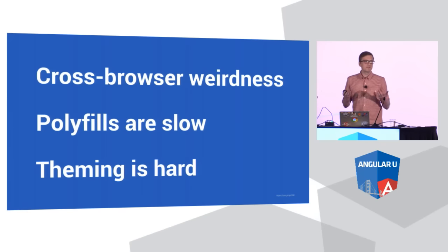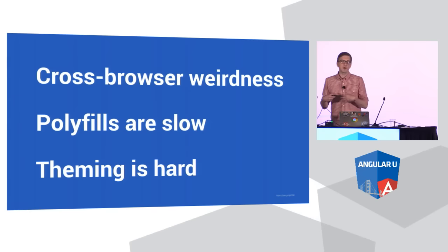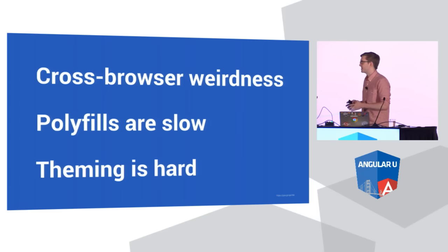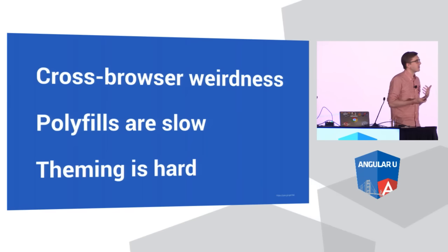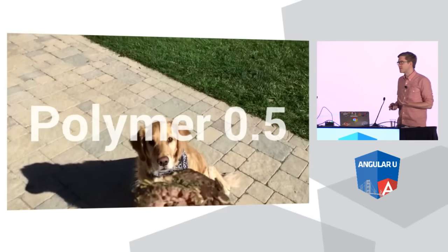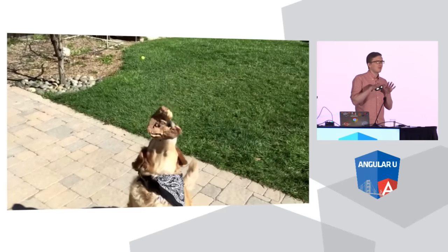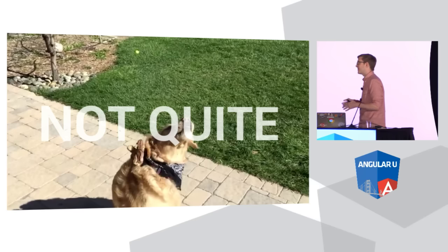They also said that theming was really hard. Shadow DOM is a really cool concept that lets you scope your CSS to your components and protect it from document-level CSS — which is awesome if you're a component author. But that's a double-edged sword, because if I take someone's component and want to apply my own branding to it, I have to resort to using weird shadow-piercing CSS selectors and combinators. So we were at Polymer 0.5, and there was a lot of promise to this library, but it just wasn't quite living up to developer expectations. We had these rough edges to work out.